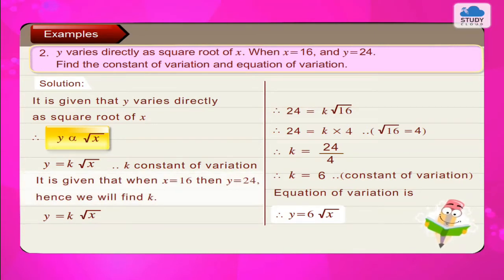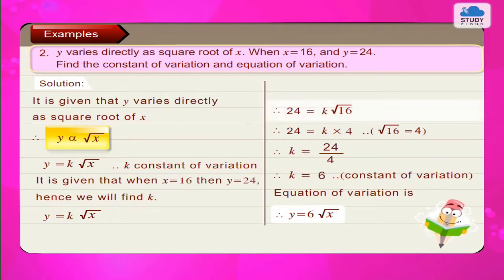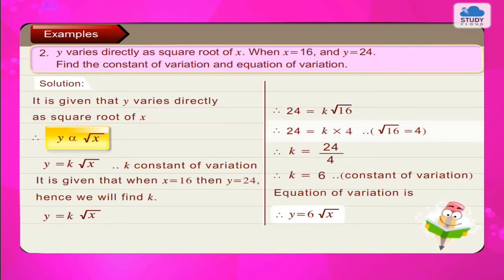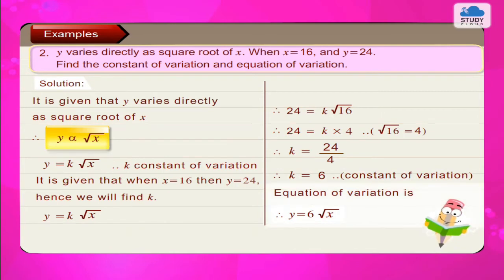It is given that when x = 16, then y = 24. Hence we will find k. y = k × √x. Therefore 24 = k × √16. Therefore 24 = k × 4, since √16 = 4. Therefore k = 24 upon 4. Therefore k = 6, which is the constant of variation. Therefore the equation of variation is y = 6√x.